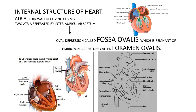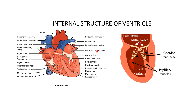The right atrium receives three openings: superior vena cava, inferior vena cava, and coronary sinus. The inferior vena cava is guarded by a valve called the Eustachian valve, and the coronary sinus is guarded by a valve called the Thebesian valve. The right atrium opens into the right ventricle through a valve known as the tricuspid valve. The left atrium opens into the left ventricle through a valve known as the mitral or bicuspid valve. These valves are attached to chordae tendinae, which in turn are attached to papillary muscles — this whole mechanism helps in opening and closing of the valves. The papillary muscles are attached to trabeculae carneae present on the walls of the ventricles.